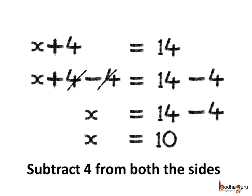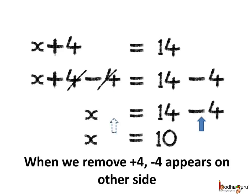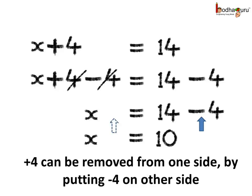Now coming back to our solution. Look carefully how we solved it. We subtracted 4 from both the sides. It disappeared from the left hand side, but it appeared on the right hand side as minus 4.